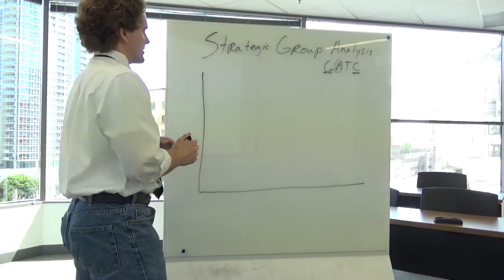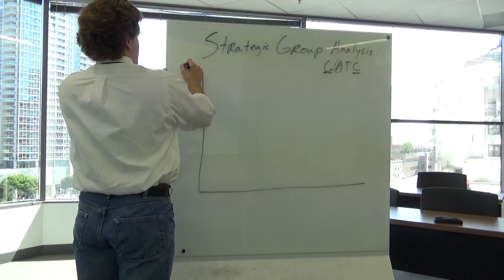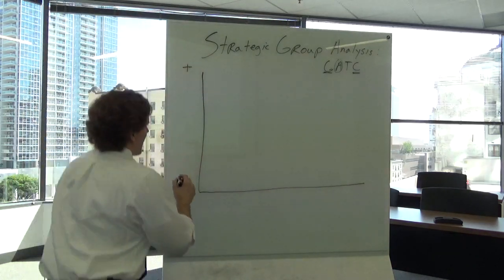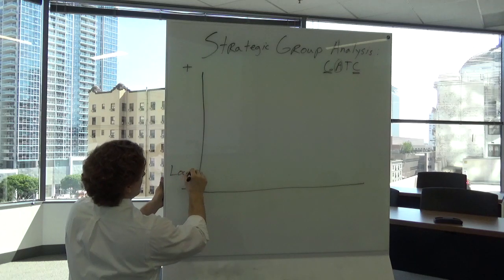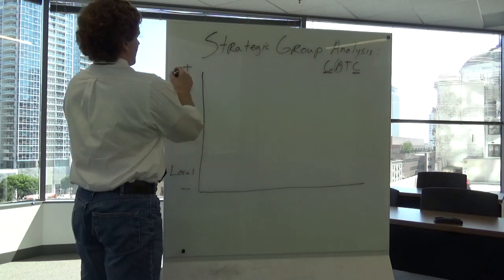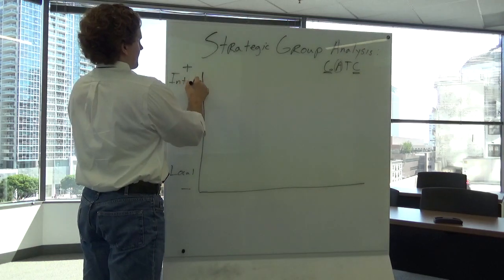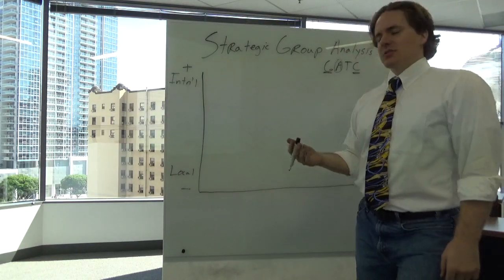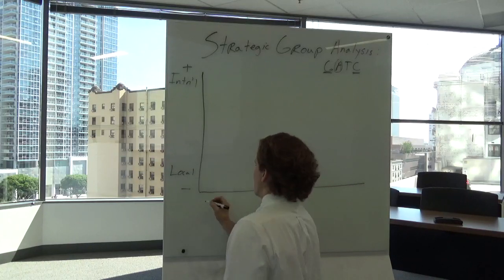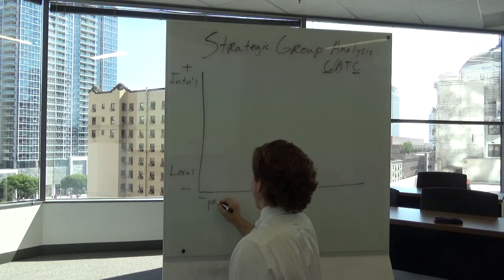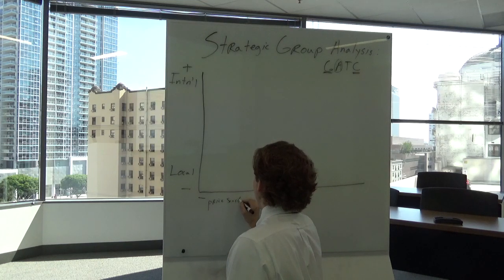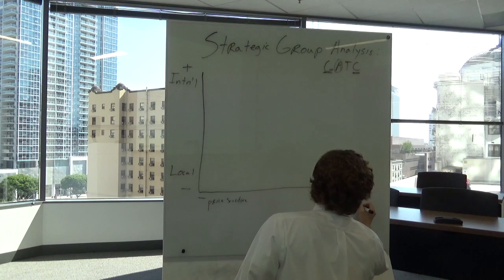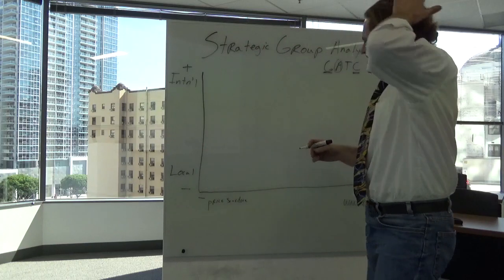But you know for groceries I think it should be pretty easy. So geography, maybe we'll put a plus and a minus here. And so we would say under geography maybe like on the minus side we talk about local firms or local regional chains. And then up at the top we put international. Now we talk about clients, we might say wealthy clients versus more price sensitive clients. So price sensitive and wealthy.